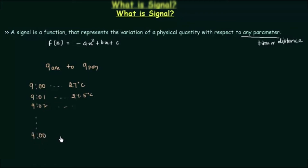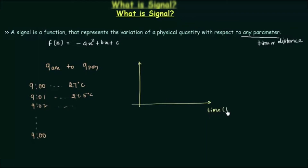He will have a list of temperatures for different times. We can plot this data. The x-axis is used for the independent quantity and the y-axis for the dependent quantity. Here the independent quantity is time, represented by small t, and the y-axis represents temperature T (capital), which is dependent on time.